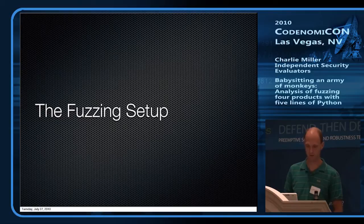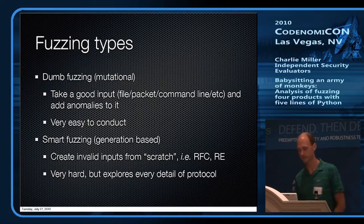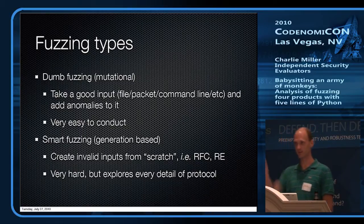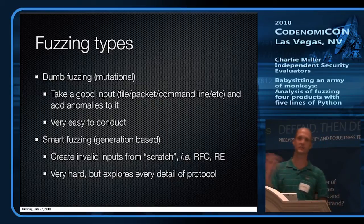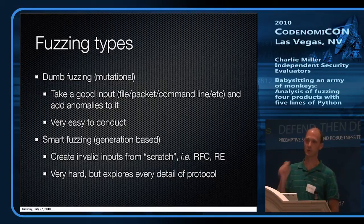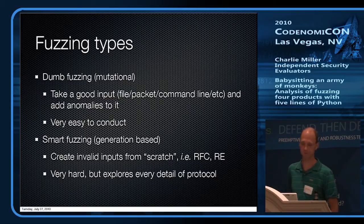There are a couple of ways you can fuzz. There's dumb fuzzing — or mutational-based fuzzing. The idea is you take good input, maybe a file or a network packet, and you tweak it by adding random changes, then send it into the program. This is really easy to do and requires no knowledge. I don't have to understand how a PDF looks or understand the spec — just take a PDF and make random changes to it.